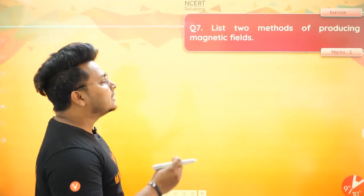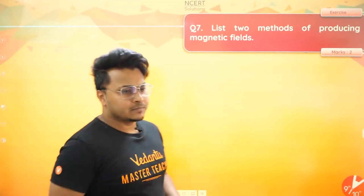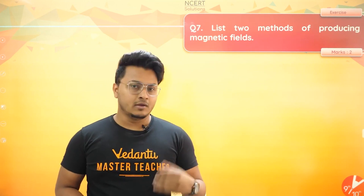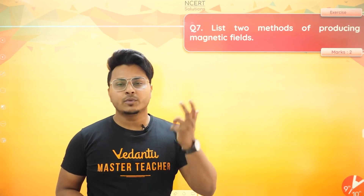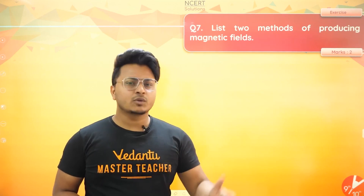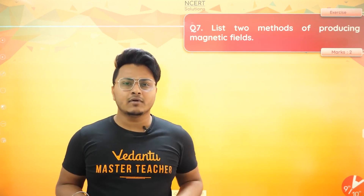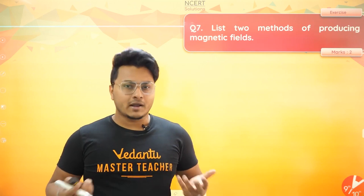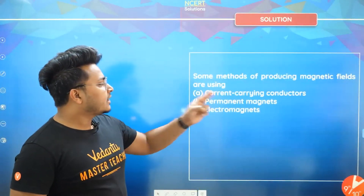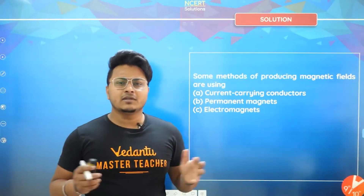Let's go to our first question: List two methods of producing magnetic field. Actually, how do you have three methods? One is to produce the electromagnetic field. Two is to produce the normal magnetic field. Three is to pass a current through a conductor — a current-carrying conductor will also have a magnetic field. So three methods: current-carrying conductors, permanent magnet, and electromagnetic field.